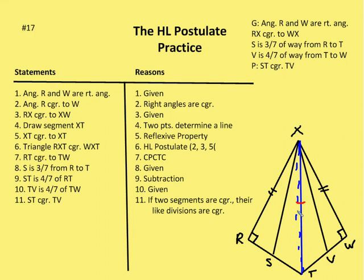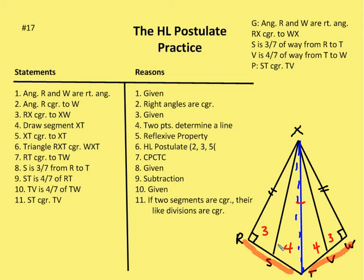I have hypotenuse XT and legs XR and XW, with right angles R and W. Then segment RT is congruent to TW by CPCTC. I state that S is three-sevenths of the way from R to T, so ST is four-sevenths of RT. And TV is four-sevenths of the way from T to W. By subtraction, ST is four-sevenths of RT and TV is four-sevenths of TW. Since RT is congruent to TW, their like divisions are congruent, so ST is congruent to TV.